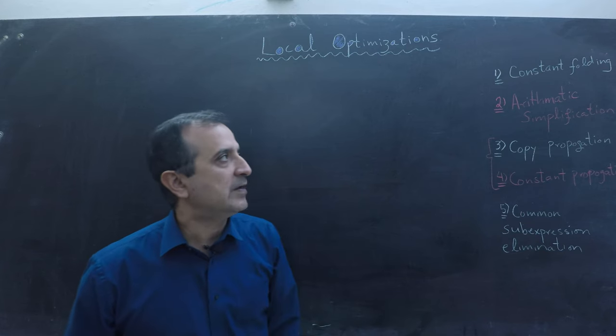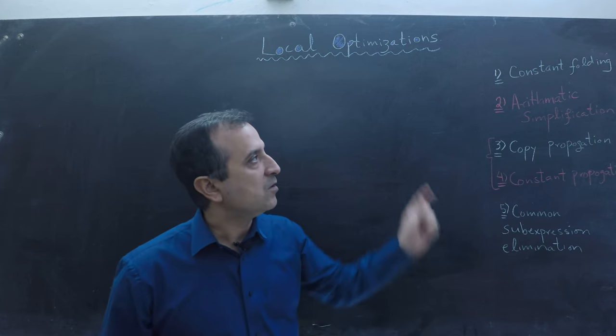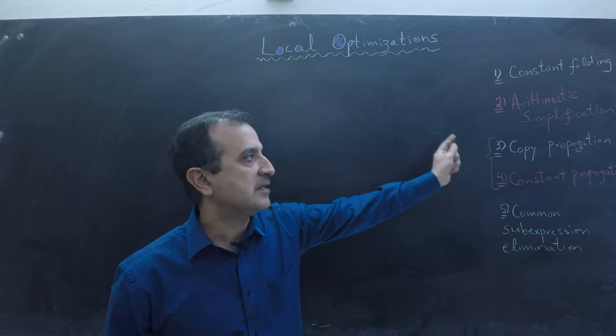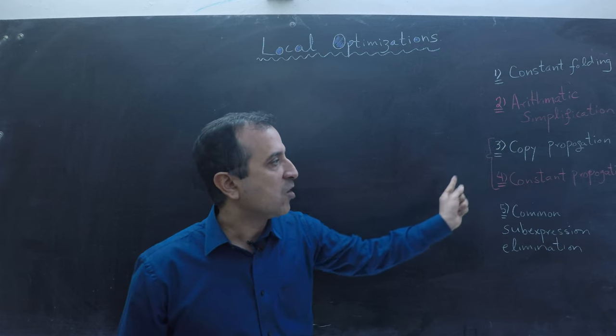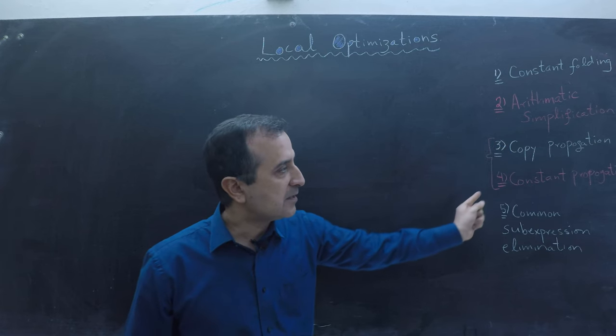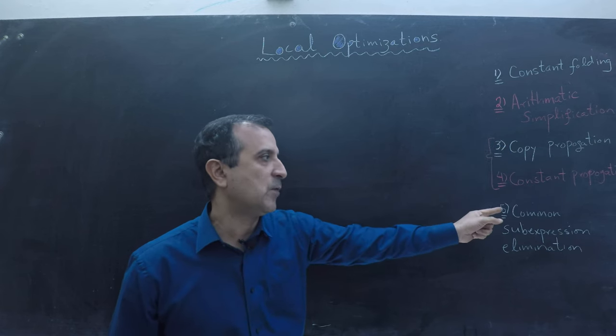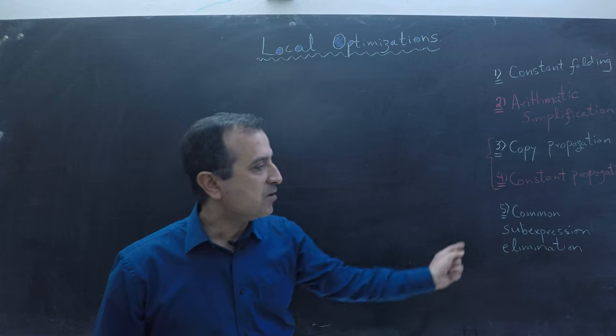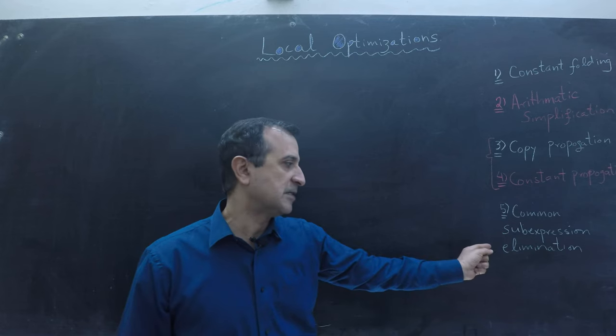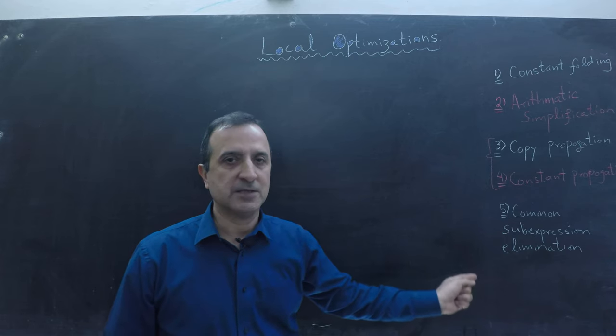In this video we will learn about these five different kinds of local optimizations. We will learn about constant folding, arithmetic simplification, copy propagation, constant propagation, and finally common sub-expression elimination.